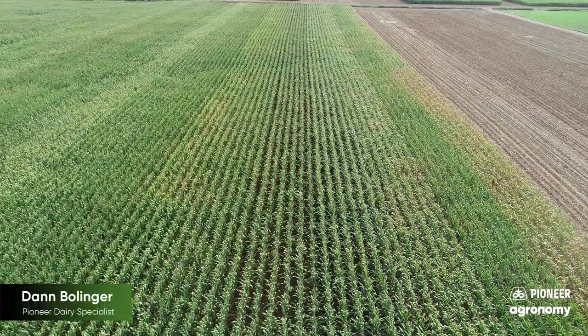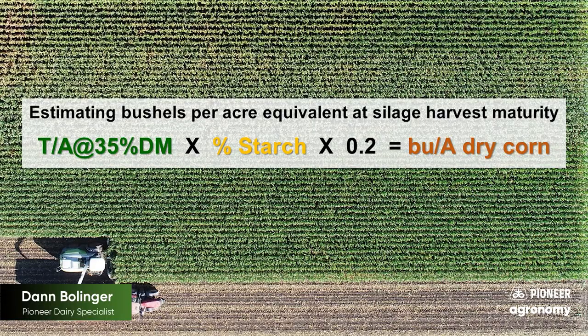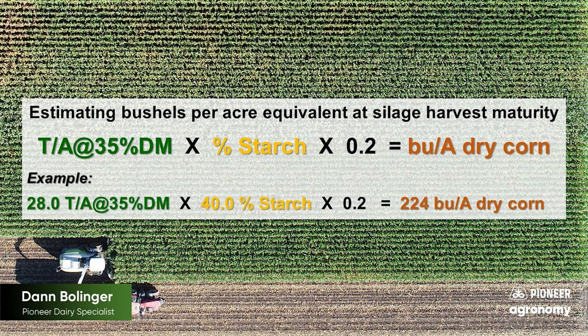I like to verify whether or not that data is even reasonable by taking the yield in tons per acre at 35% dry matter, times percent starch as a percentage, times the conversion factor of 0.2, and that gives us bushels per acre equivalent around the time of silage harvest. That gives us an idea of whether this data is even reasonable.